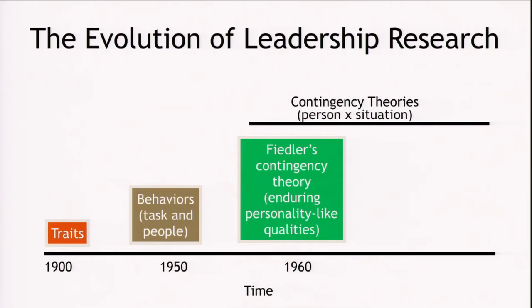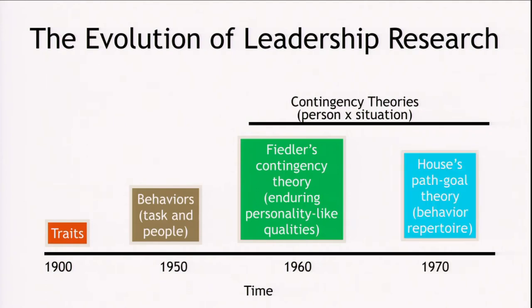Around the 1960s, as you see, Fiedler's Contingency Theory, which talks about enduring personality-like qualities, emerged. And later, in around the 1970s, we have House's path-goal theory, which talks about behavior as such.